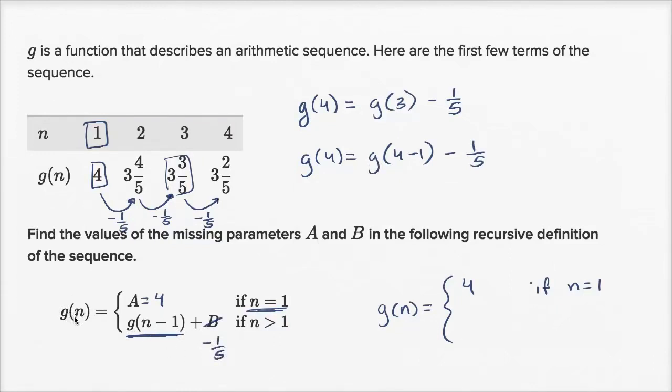Once again, if I'm trying to find the fourth term, if n equals 4, I'm not going to use the first case because that's for n equals 1. So if n equals 4, I would use the second case. Then it would be g(4-1), which is g(3) minus 1/5.